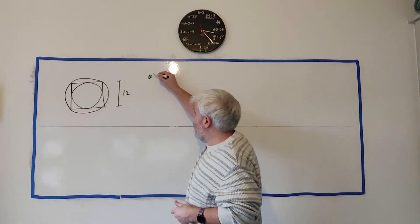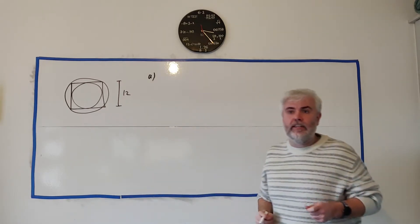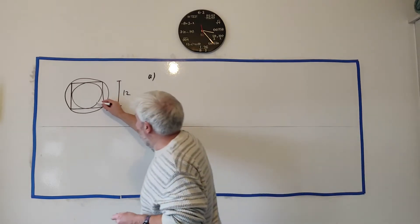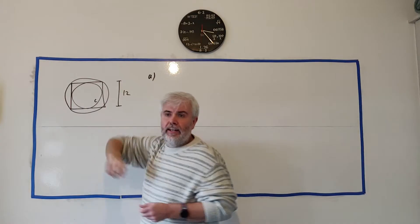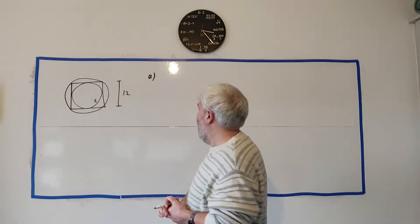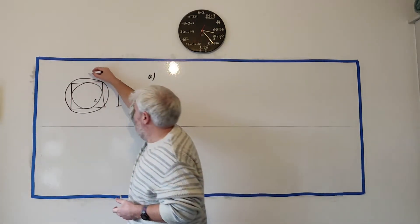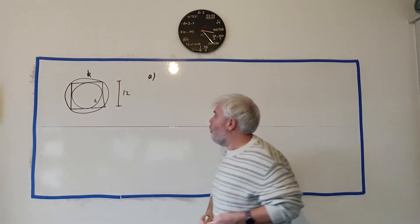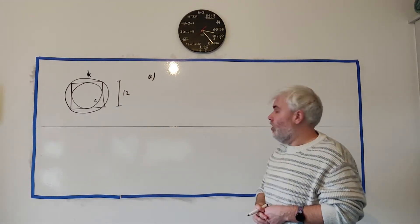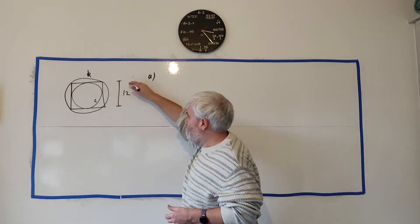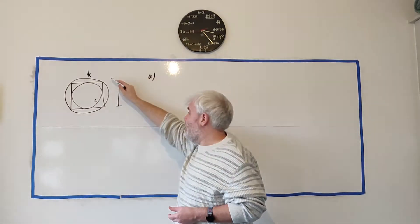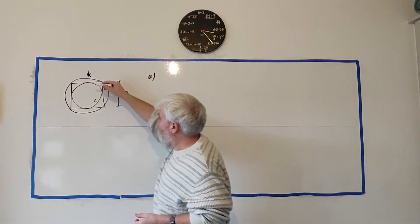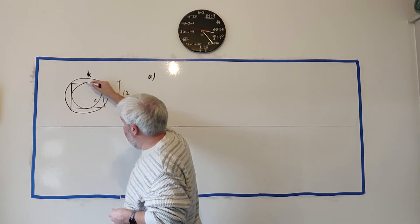To start us off in part A they simply ask us to find the radius of circle C. That's the inner circle. The inner circle C and the outer circle is K. So what is the radius of this inner circle? This one should be straightforward because they tell us the height of the square is 12 and they tell us the circle is inside the square.